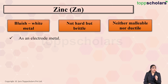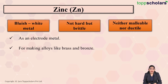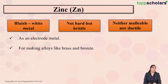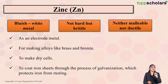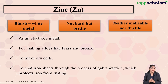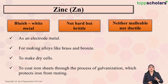Zinc is used as an electrode metal. Zinc is also used for making alloys like brass and bronze. Zinc is used for making dry cells. Zinc is also used for coating iron sheets — a process called galvanization.